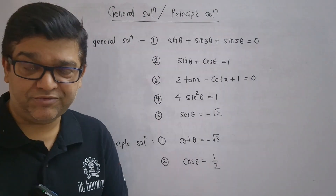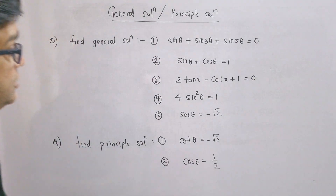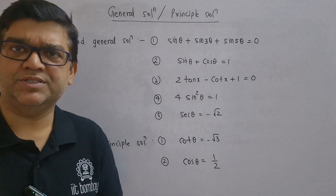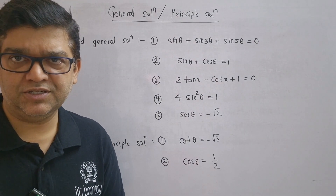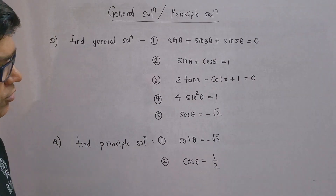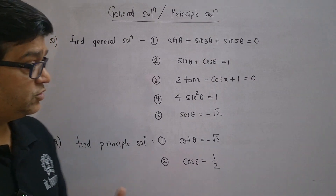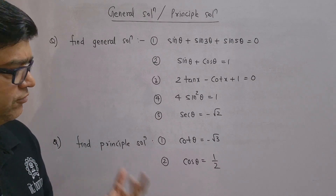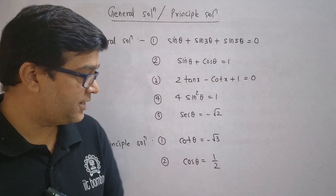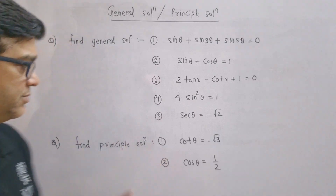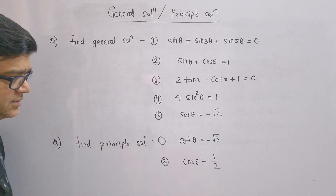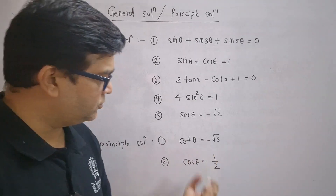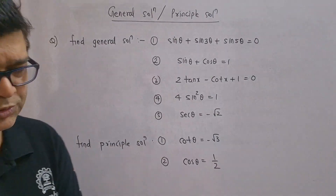Moving on, the next important questions for 2024 HSC board examinations are from general solution and principal solution. Find the general solution of: sinθ + sin3θ + sin5θ = 0; sinθ + cosθ = 1; 2·tanx − cotx + 1 = 0; or 4·sin²θ = 1; or secθ = −2. Finding the principal solution is also frequently asked — for example: cotθ = −√3, cosθ = 1/2, and similar.